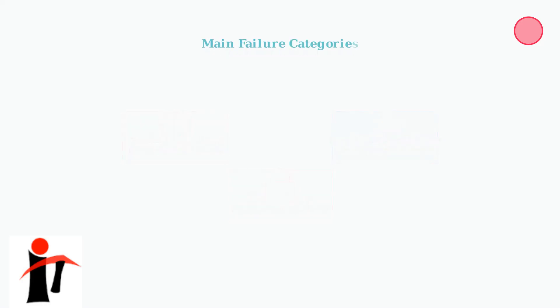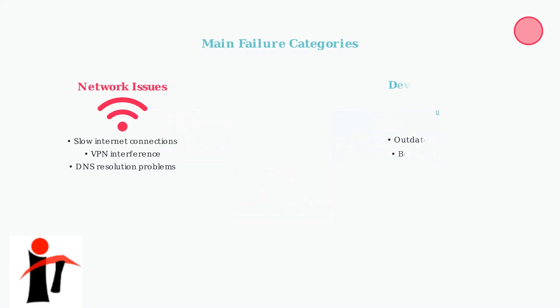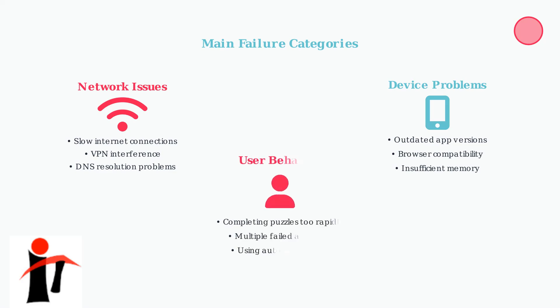Problems can arise from three main categories. Network issues include slow internet connections, VPN interference, and DNS resolution problems.